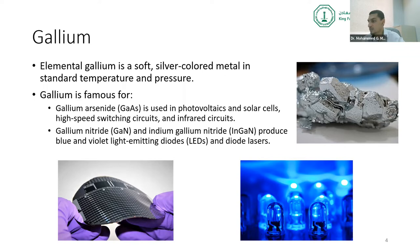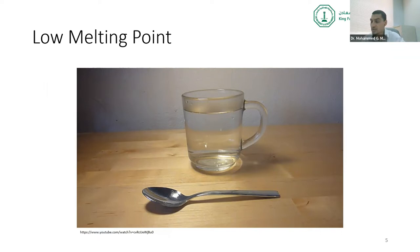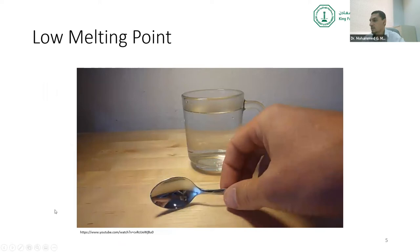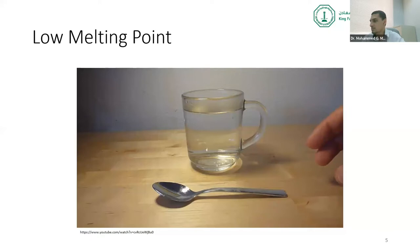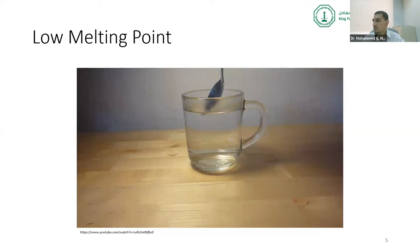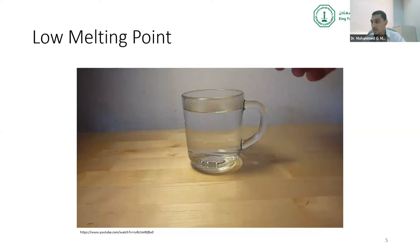I want to draw your attention to some very interesting properties of gallium. First, gallium has a very low melting point. As you see in this video, this is a spoon made of gallium — it looks and behaves like a metal. But when it's put in a cup of hot water, it melts and looks like mercury. This is because the melting point of gallium is 30 degrees Celsius, so it even melts in your hand if you hold it.